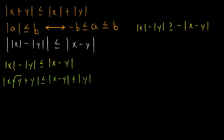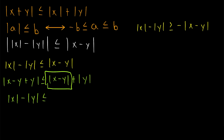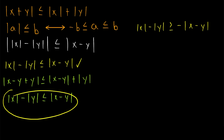Now, minus Y plus Y is zero, so we have |X| on the left side of the inequality. Subtracting |Y| from both sides gives us |X| - |Y| ≤ |X - Y|. We have accomplished our first mission: proving that the absolute value of X minus the absolute value of Y is less than or equal to the absolute value of X minus Y.